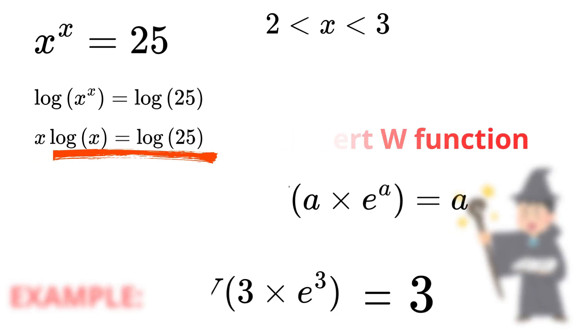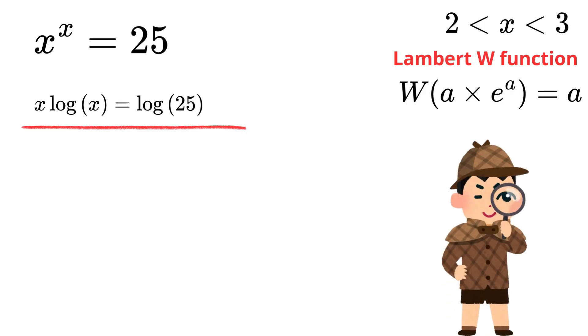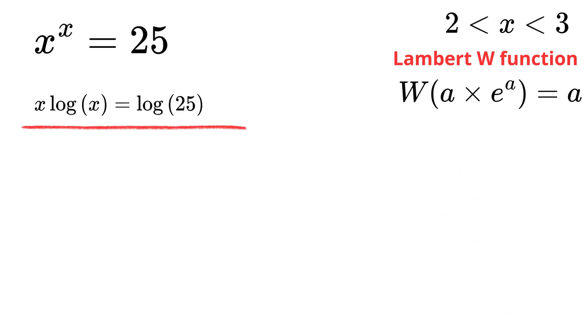Our equation is x multiplied by the natural logarithm of x equals the natural logarithm of 25. We don't see an exponential yet, but we can rewrite x as e raised to the power of the natural logarithm of x.